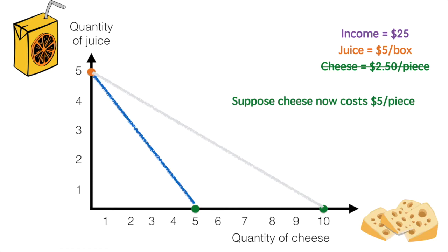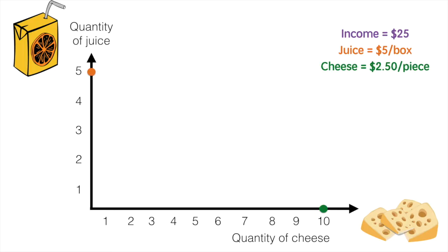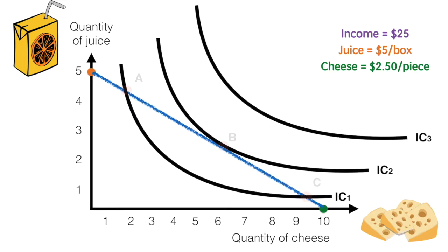This will impact our previous diagram and change the utility maximizing combination. Let's bring back the indifference curves to see what happens. If we look at the original budget line before the change in price, we can see that point B is the preferred combination. However,